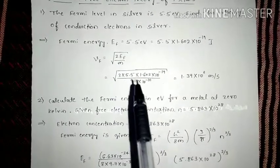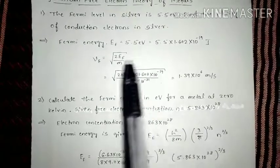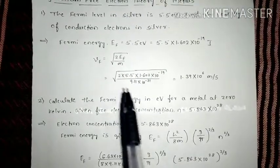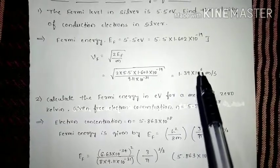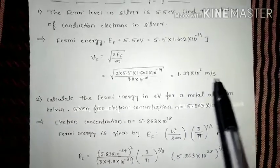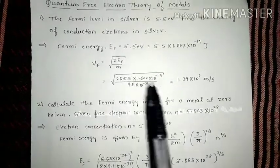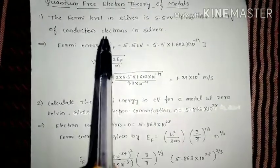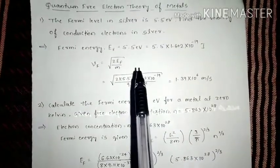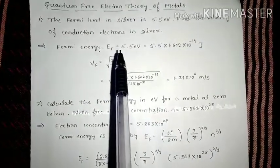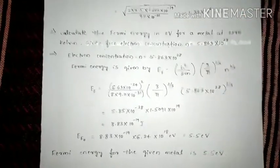M is the mass of an electron — a standard value we substitute. When we simplify the entire term, we get 1.39 × 10⁶ meters per second. This is the Fermi velocity, or the velocity of conduction electrons in silver. This is how we can easily calculate it when we know the Fermi energy.